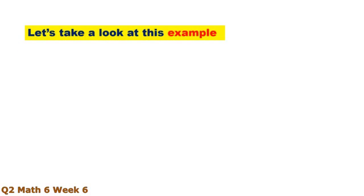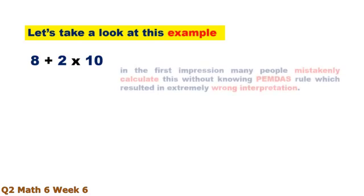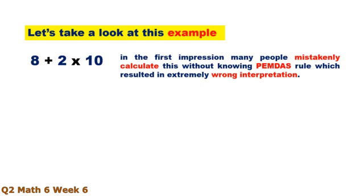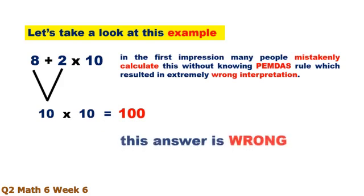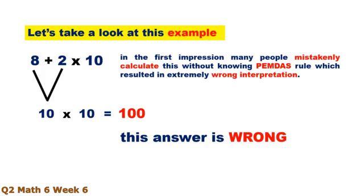Let's take a look at this example: 8 plus 2 times 10. In the first impression, many people mistakenly calculate this without knowing PEMDAS rule, which results in an extremely wrong interpretation: 8 plus 2 equals 10, times 10, equals 100. This answer is wrong.